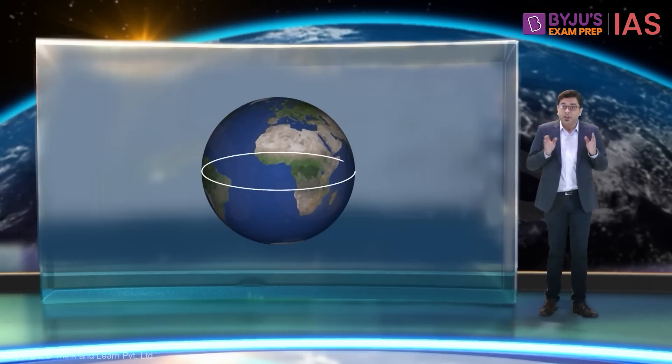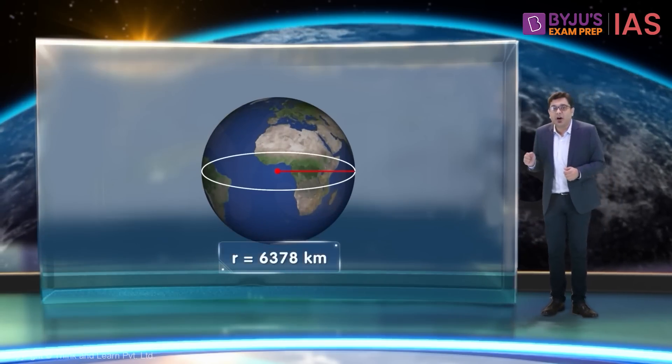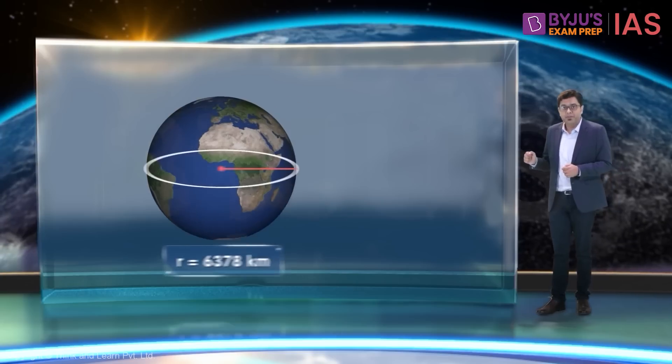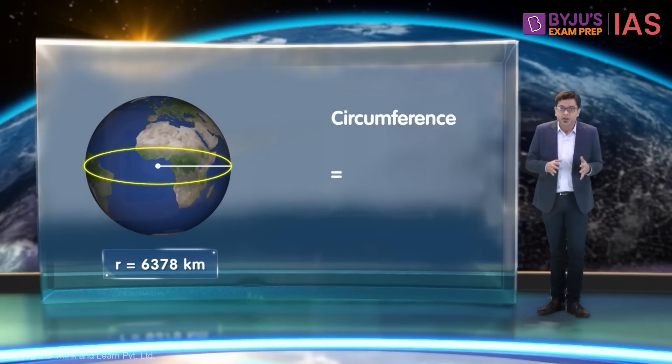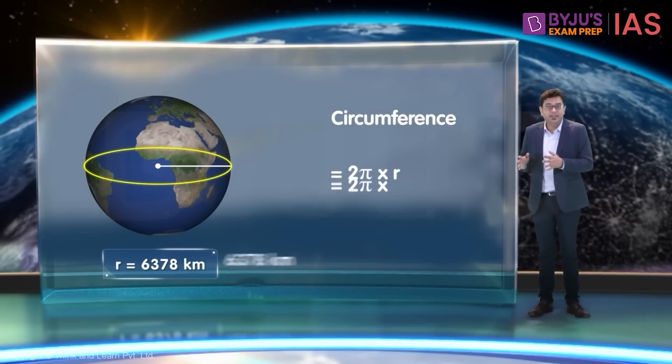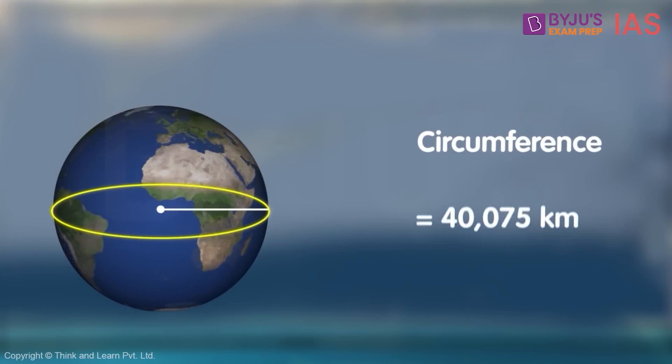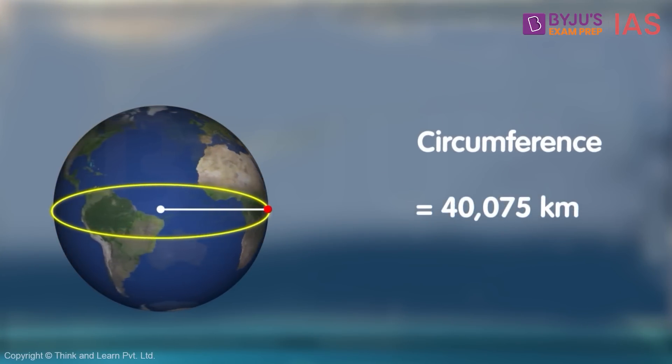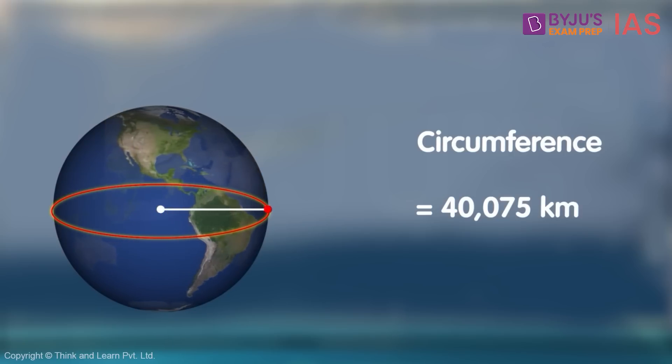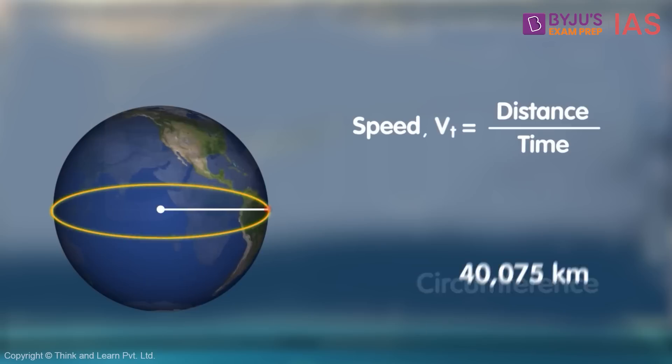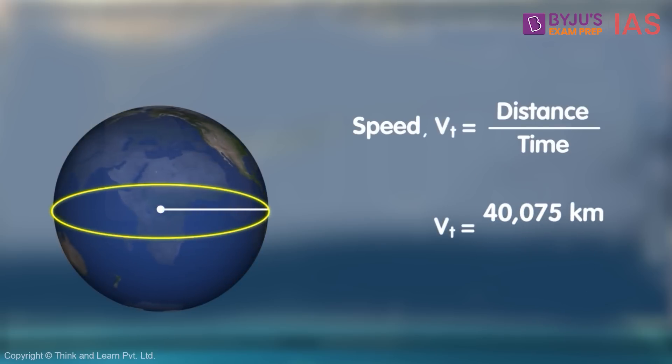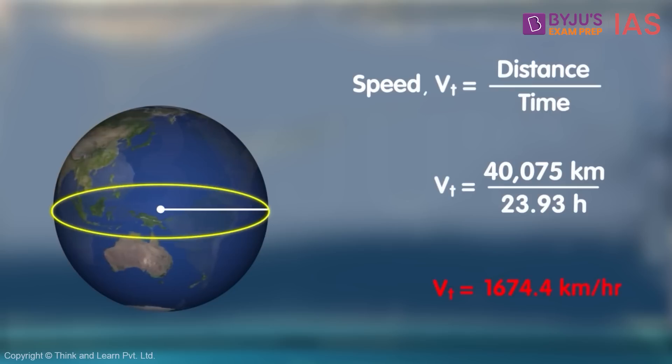The radius of the earth at the equator is 6,378 km. Thus, the circumference of the earth will be 2 pi into radius. That is roughly around 40,075 km. This means to complete one full rotation from a given point on the equator, one will have to travel this much distance. So what will be the speed of that point? That will be 40,075 km divided by 23.93 hours and that gives us 1674.4 km per hour.